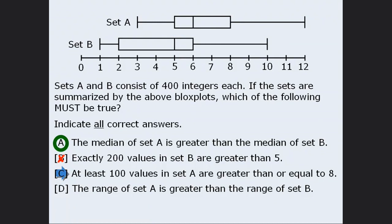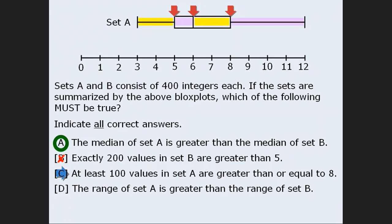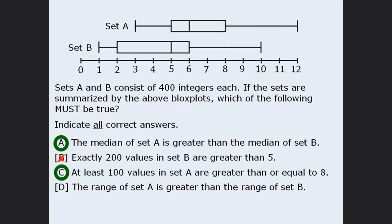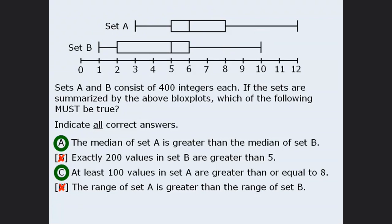On to statement C. Must it be true that at least 100 values in set A are greater than or equal to 8? The three quartiles divide the 400 integers into four groups of 100 integers. Since the third quartile is 8, the 100 numbers lying to the right of 8 must be greater than or equal to 8. This means statement C must be true. Finally, statement D: is the range of set A greater than the range of set B? Set A ranges from 3 to 12, so its range is 9. Set B ranges from 1 to 10, so its range is also 9. We cannot say statement D is true. The correct answers are A and C.